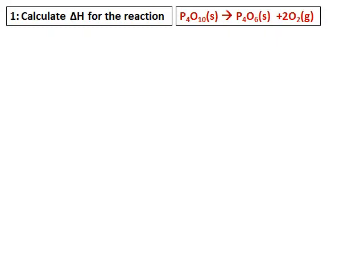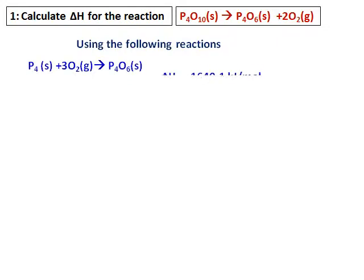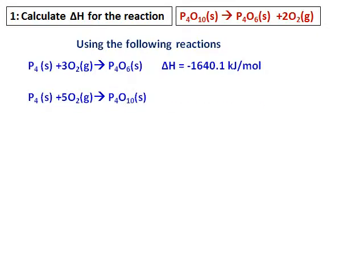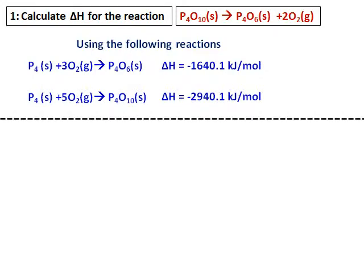Calculate delta H for a given reaction. In order to calculate the delta H, we have been asked to use the following reactions: P4 + 3O2 → P4O6, with delta H given, and P4 + 5O2 → P4O10, with delta H also given.